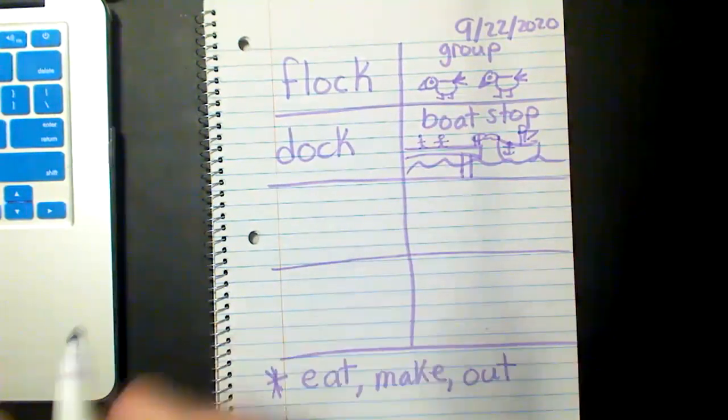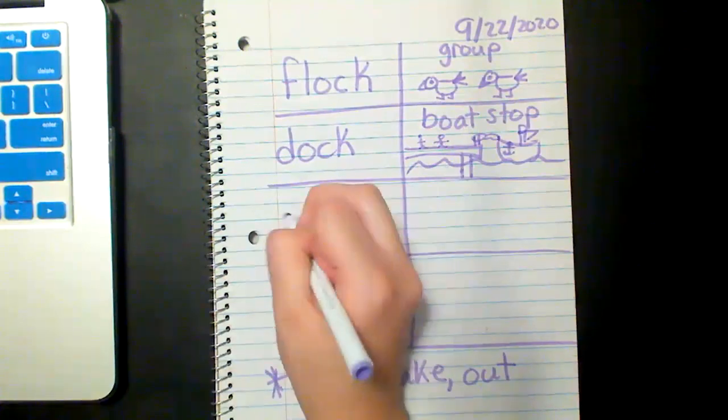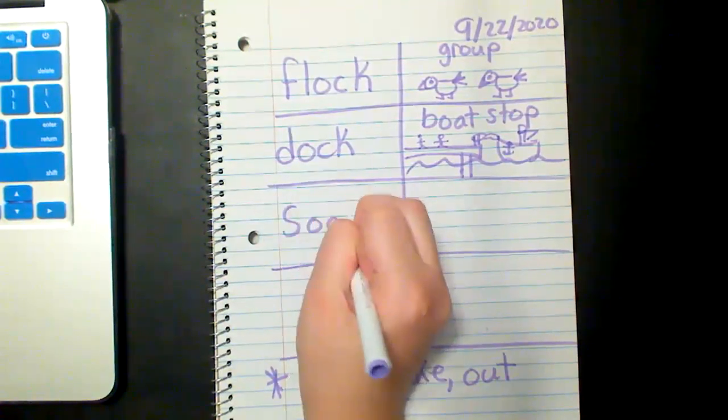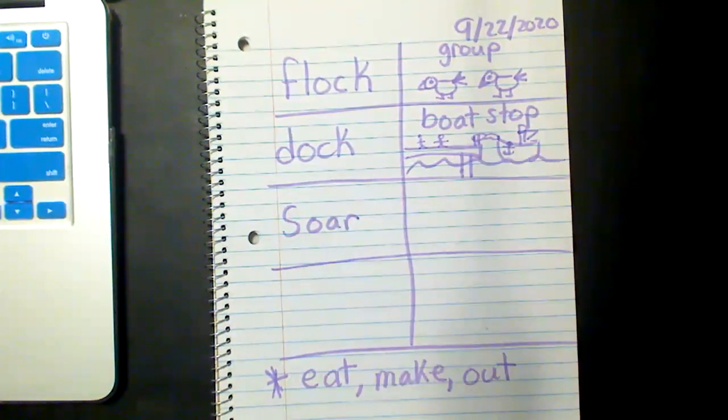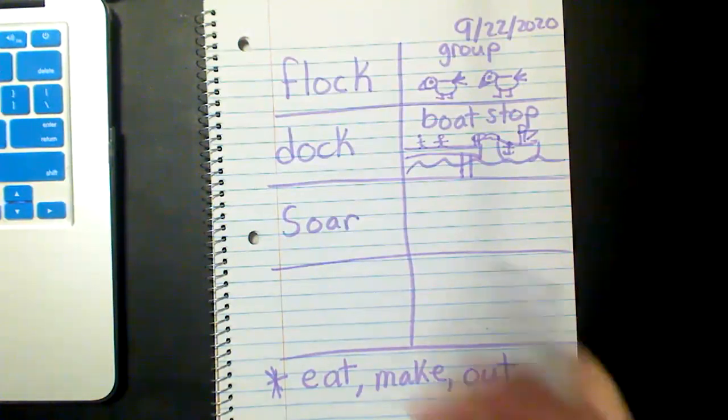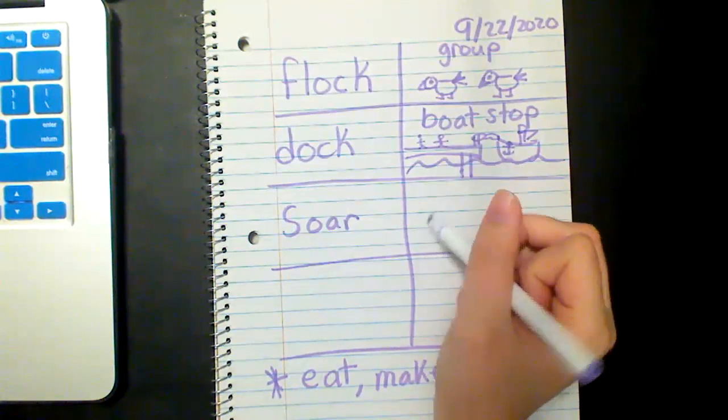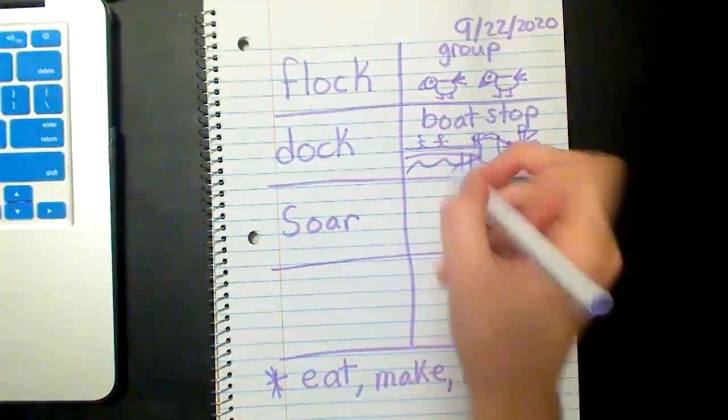Our next vocabulary word was soar. And the example I gave students was he soared into the sky. Abuela and Rosalba soared into the sky super duper high. The birds soared up, up above the clouds. So that gave students the idea that soar means to fly.